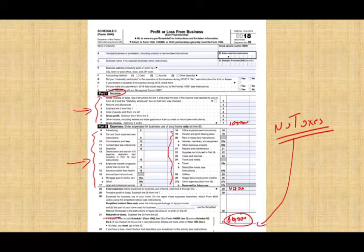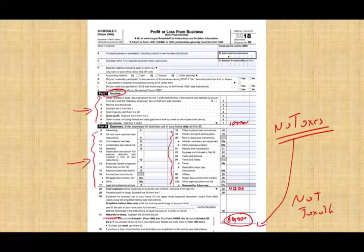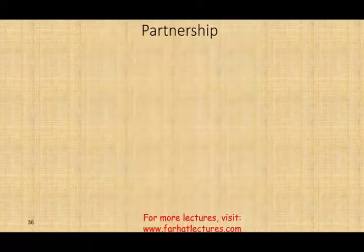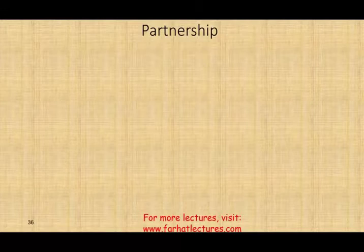The $60,000 is not taxable yet at the business level — no taxes are paid there. Therefore it goes to me as the owner. This is an important concept because the business is not a separate entity. My YouTube business income is my personal income. The business profit flows directly to me and I pay taxes on it personally.